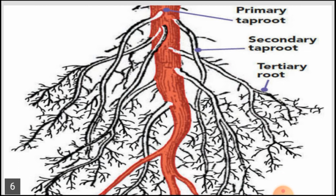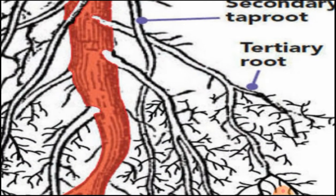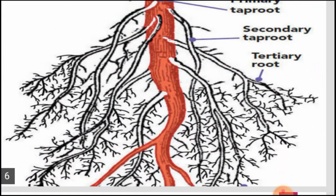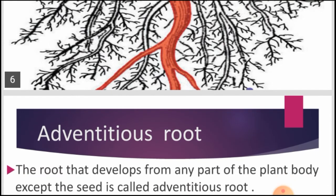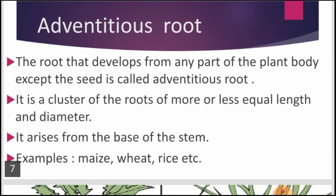In a tap root system, the primary root has a larger diameter compared to secondary and tertiary roots. Secondary roots arise from the primary root, and in turn give branches called tertiary roots. Tertiary roots bear small fine hair-like structures called root hairs.